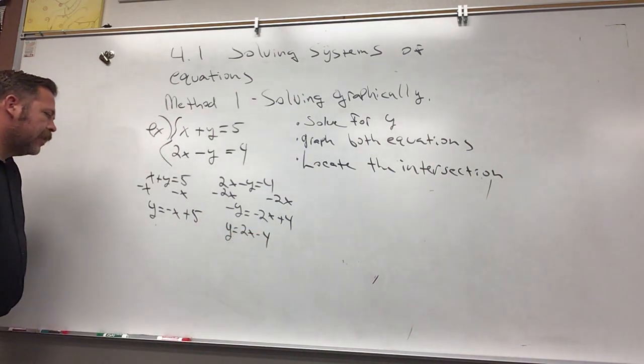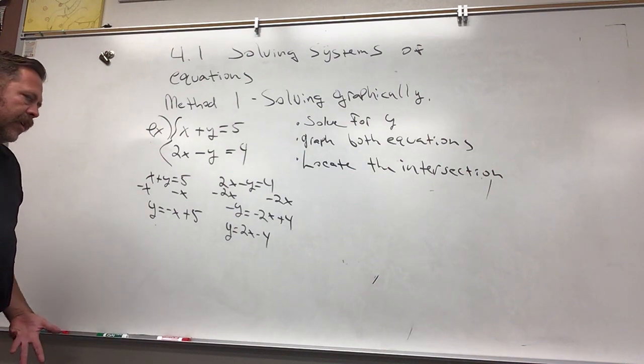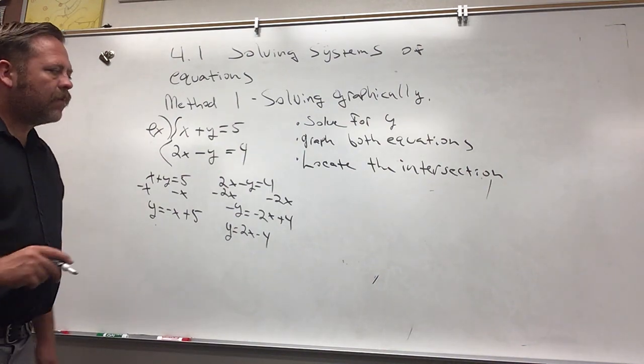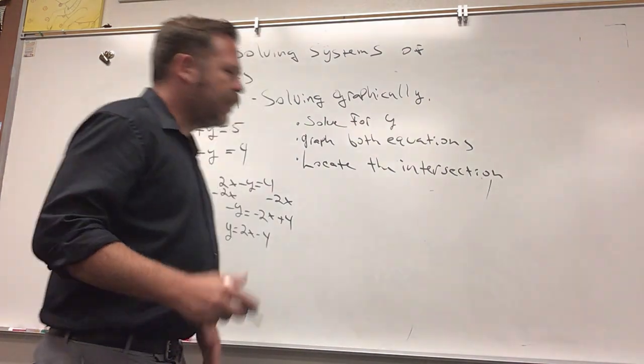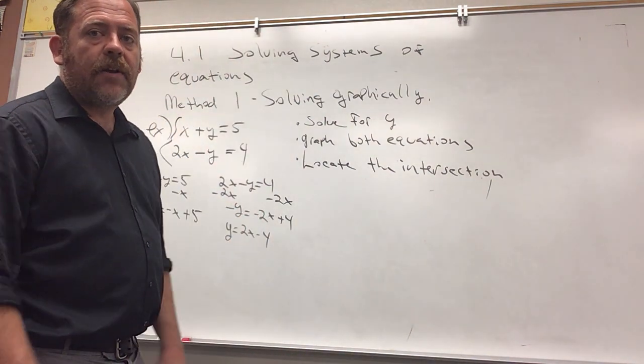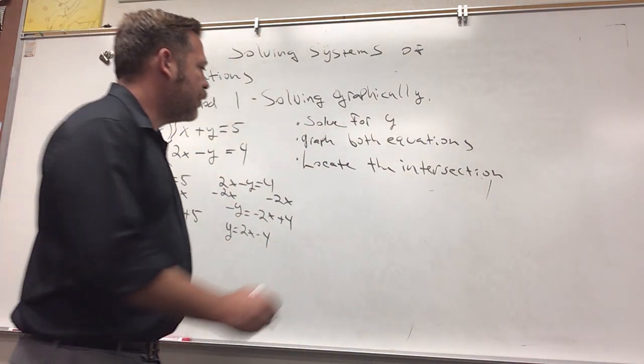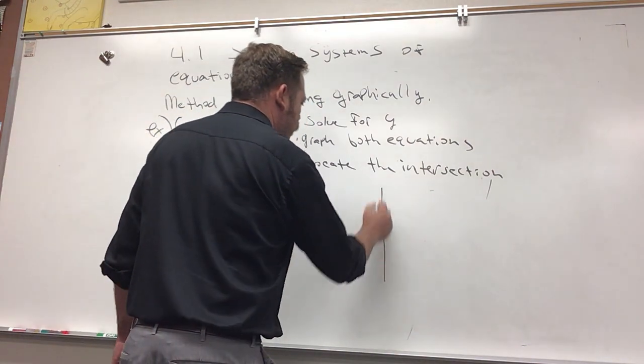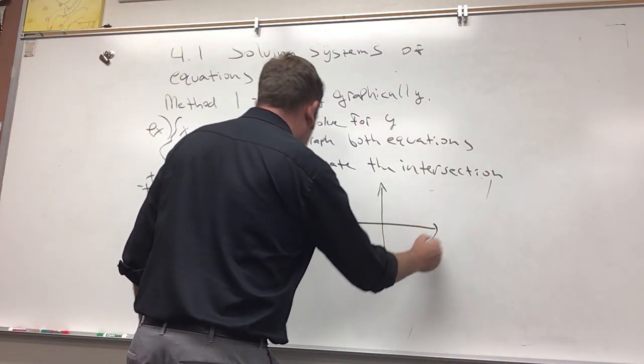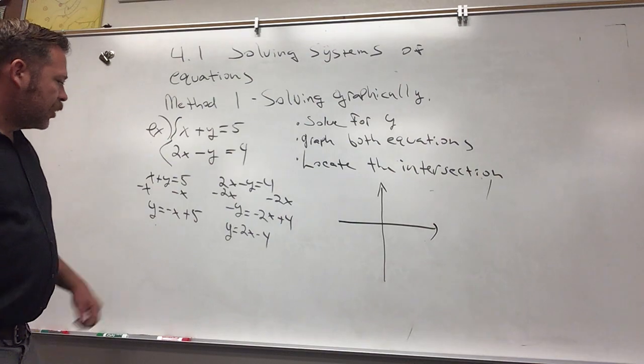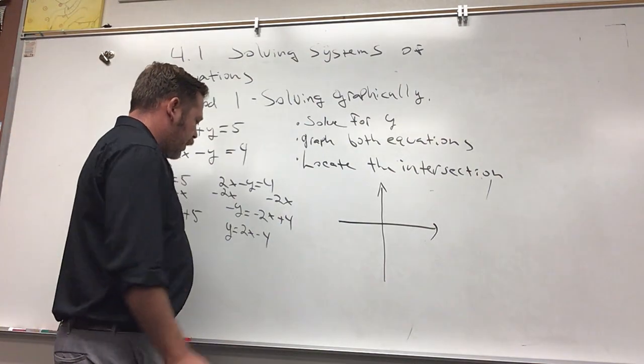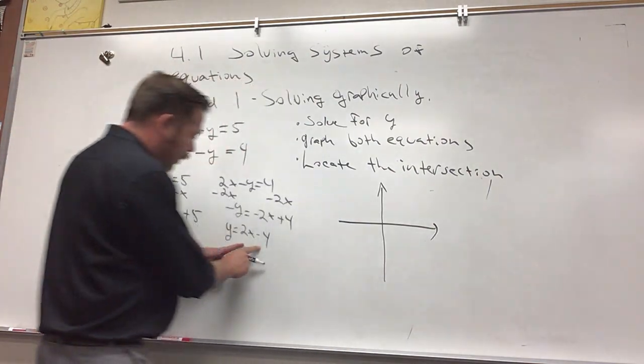Now, this way of solving is pretty neat, but the only problem is that when you graph it, your graph has to be just right or the lines don't end up intersecting in the right place, which makes your solution not work out. If I start this first one at negative 4, I'm going to graph this one first.